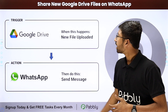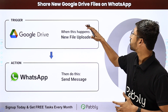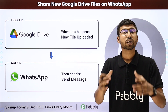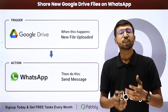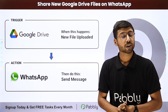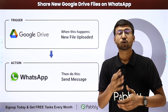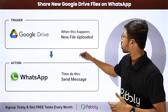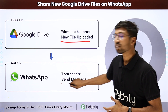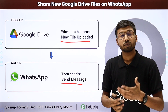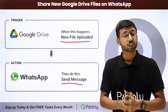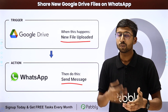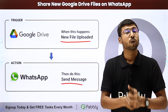The third automation is how to share new Google Drive files on WhatsApp. Suppose you and your team collectively use a single Google Drive account, and you want to get notified whenever a new file is uploaded. You can set up an automation to receive details like the file name and link as a WhatsApp message on your own number, or notify your team members and colleagues as well.